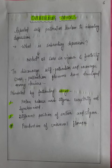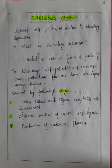The second one is the position of the anther and stigma — they differ, having different positions so that pollen transfer cannot occur. The third one is the production of unisexual flowers — plants avoid producing bisexual flowers to prevent self-pollination.